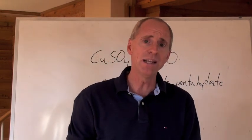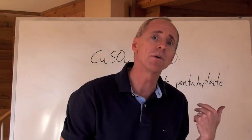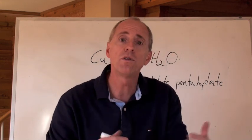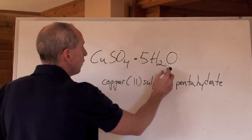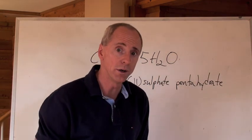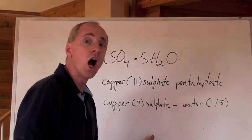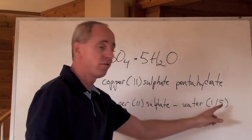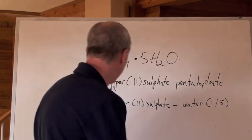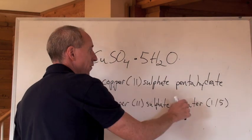Now, there is another way of naming that chemical, and you'll see both methods being used. This can be called copper(II) sulfate pentahydrate, or copper(II) sulfate water 1:5, which just means that there's one copper(II) sulfate for every 5 waters.